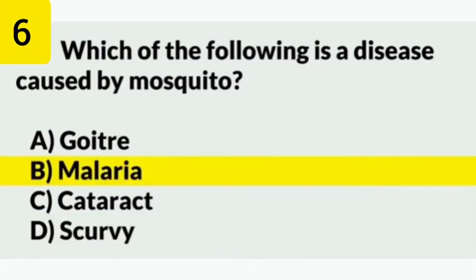Number 6. Which of the following is a disease caused by a mosquito? Answer is option B: Malaria.